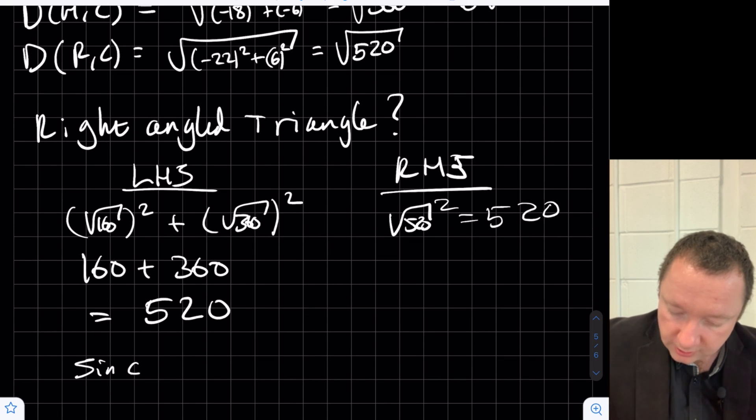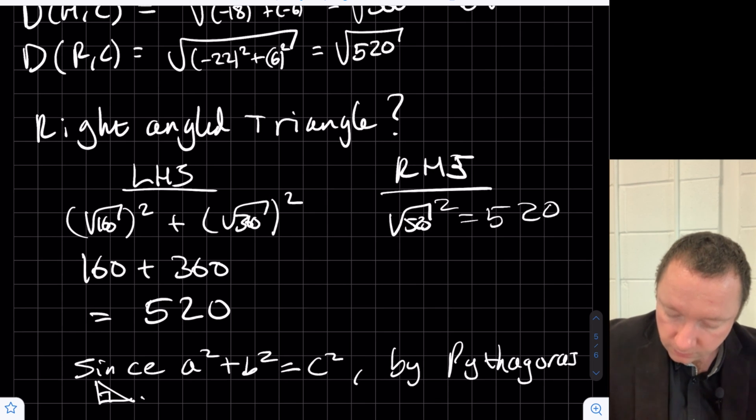So since a squared plus b squared equals c squared, by Pythagoras, we have a right-angled triangle. Okay, now where's the right angle?